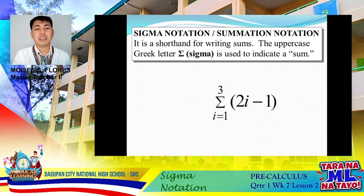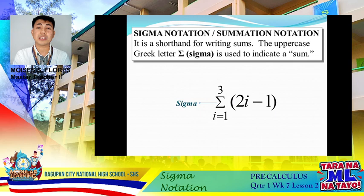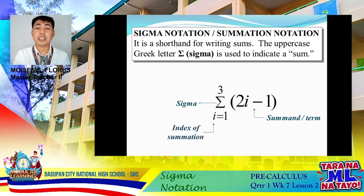Here we have K. For the parts of our sigma notation: the symbol is called sigma, representing the summation. This function is called your term or the sum. And your i is represented by the index of summation — in some references, it could be represented by any variable or any letter.